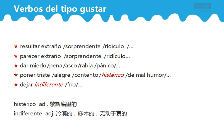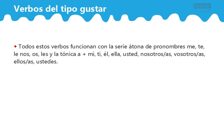上面这些就是哈老师给大家总结的这些词，虽然并不是所有的，但他们都有一些共通性。Bien, entonces todos estos verbos funcionan con la serie átona de pronombres, por ejemplo: me, te, le, nos, os, les，以及重读代词 a mí, a ti, a él, a ella, a usted, a nosotros, a nosotras, a vosotros, a vosotras, a ellos, a ellas, a ustedes。所有这些动词都用语格代词 me、te、le、nos、os、les，同时可以用重读代词。